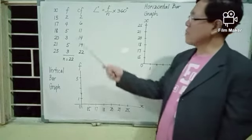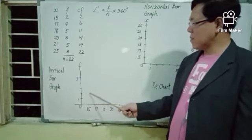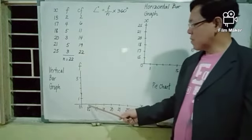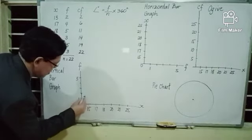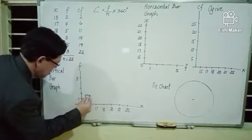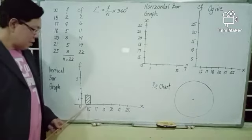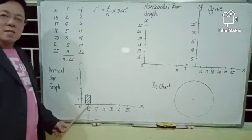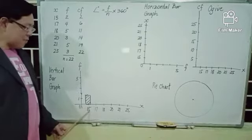We now draw the vertical bar graph. The frequency of 15 is 2. From 15, we construct a vertical bar — a vertical rectangle — whose height corresponds to the frequency of 15, which is 2. We write 15 at the center of the lower base of the rectangle. The height of this rectangle is 2, which is the frequency of 15.